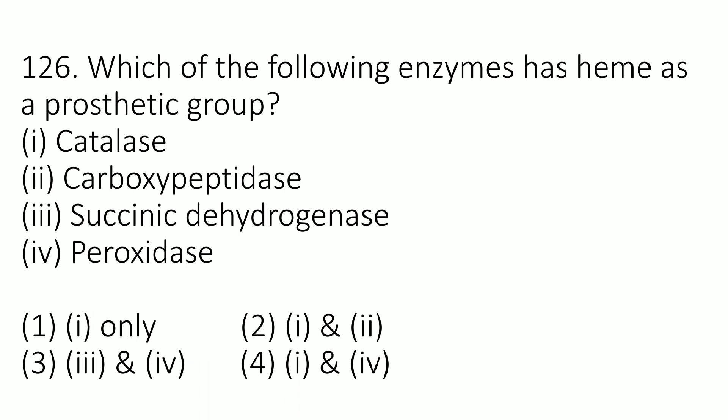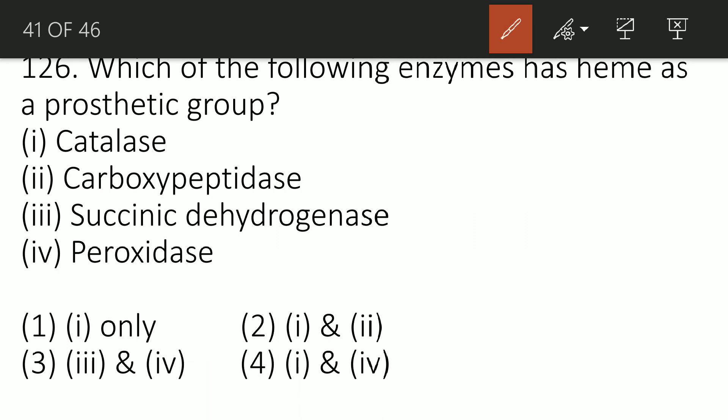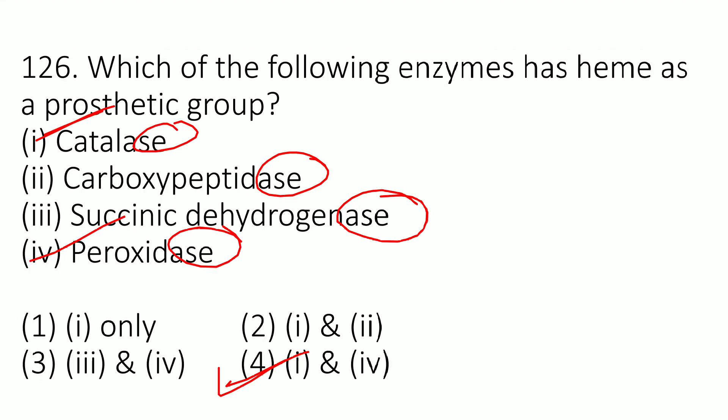Question 124: Which of the following enzymes has heme as a prosthetic group? The correct option is statements 1 and 4 — catalase and peroxidase. Both catalase and peroxidase catalyze the breakdown of hydrogen peroxide to water and oxygen, and heme is their prosthetic group.